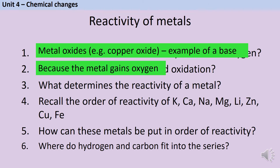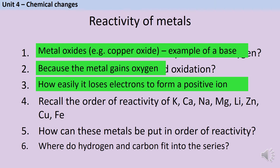The reactivity of a metal is determined by how easily it can lose its outer shell electrons to form a positive ion. When those metals are put in order of reactivity, firstly we see the alkali metals: potassium, then sodium, then lithium, arranged in order from largest to smallest. Then the group 2 metals, calcium and magnesium, again largest to smallest. And then the transition metals go in the order zinc, iron, then copper.